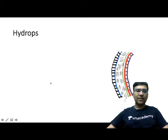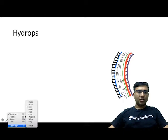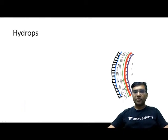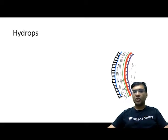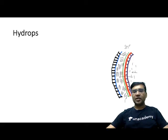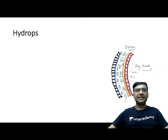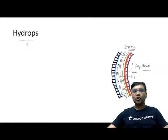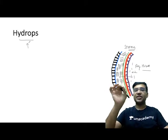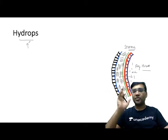Dua's membrane is sometimes considered a separate layer and sometimes a layer within the stroma. What happens in hydrops: in cases of keratoconus, because of corneal thinning, the aqueous humor beneath the endothelium goes into the stroma due to a Descemet's membrane tear. This is called hydrops.